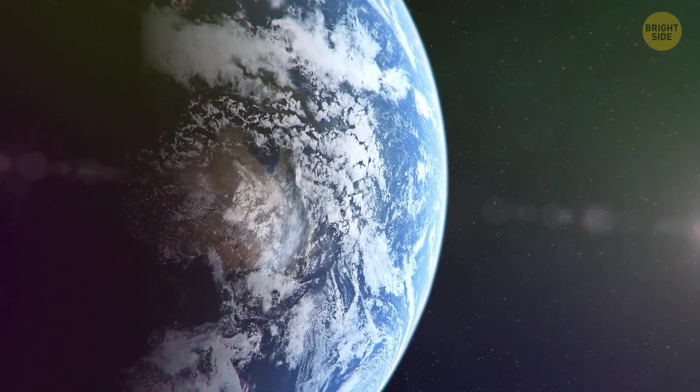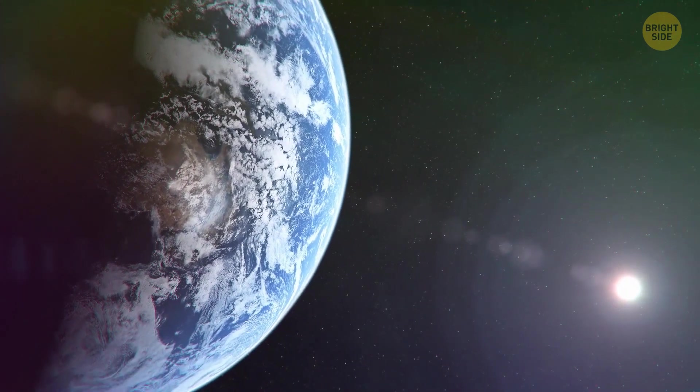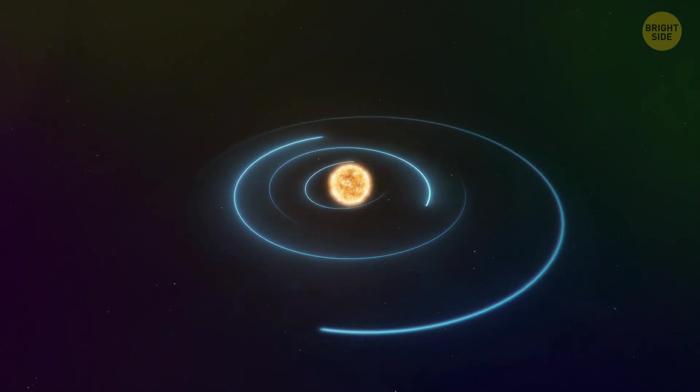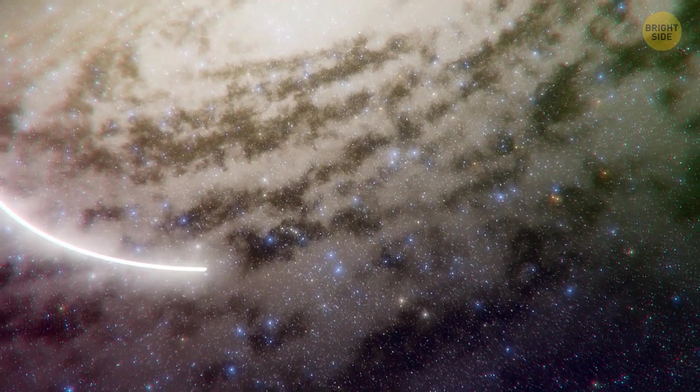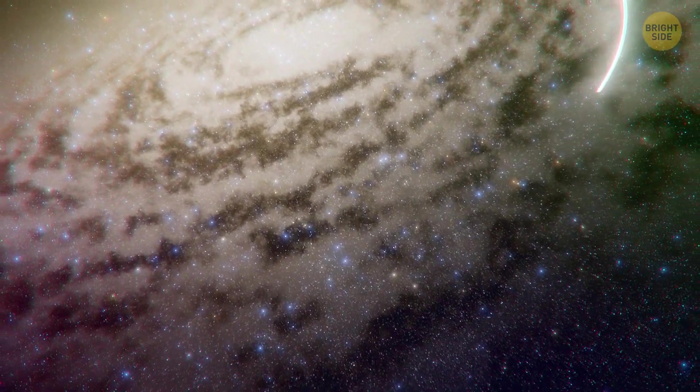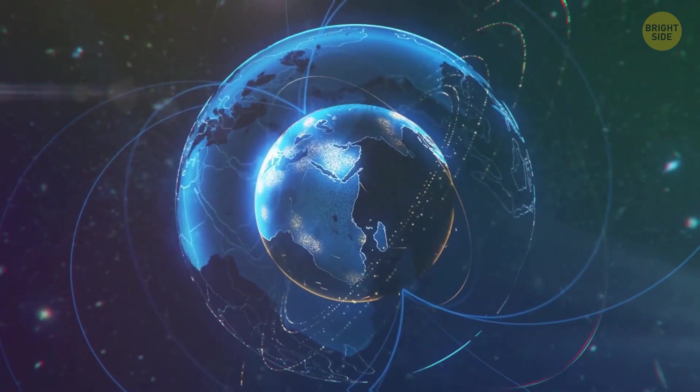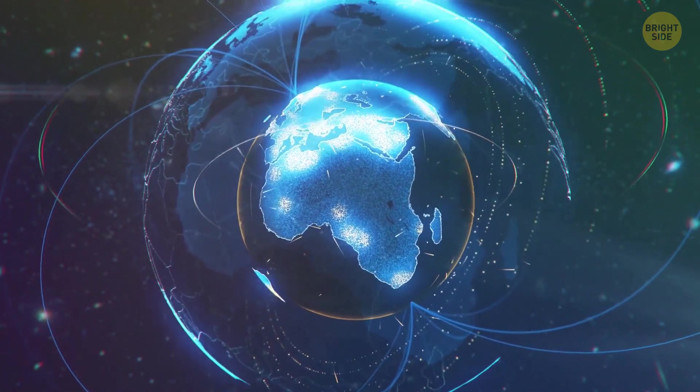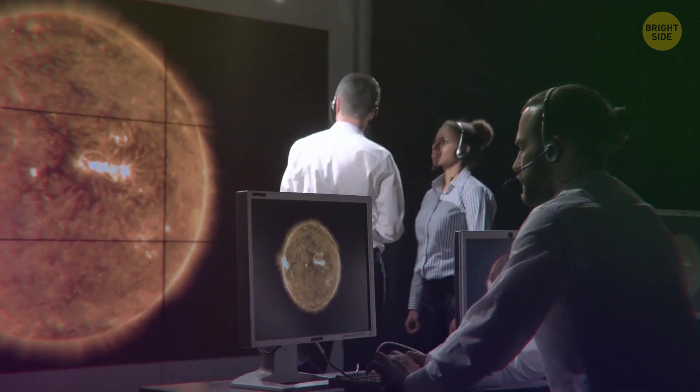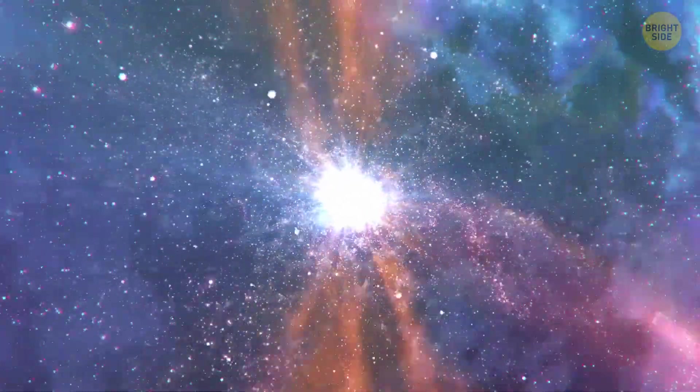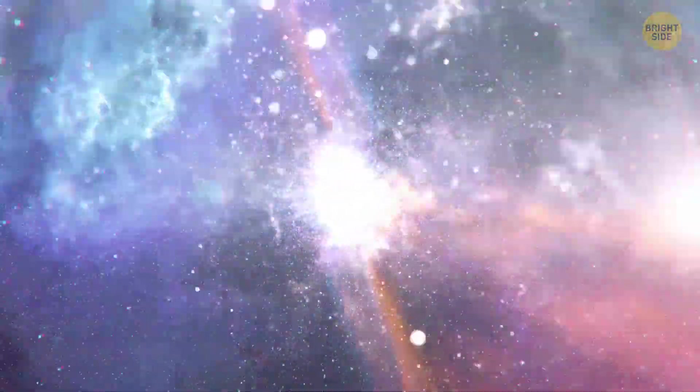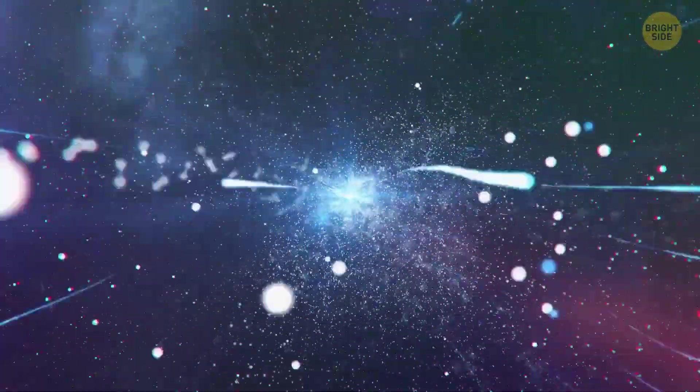Then there's gravity. It attracts all objects in the universe to each other, which is the reason why planets keep orbiting the Sun, or why our solar system orbits the center of the Milky Way. It's why we stay on the ground, while in space, we'd float, since there's no gravity up there. Having all this in mind, scientists got the idea that one day, the universe will simply take the opposite direction and start shrinking back, which will be known as the Big Crunch.